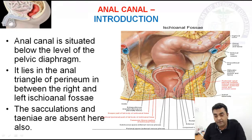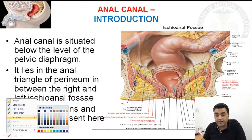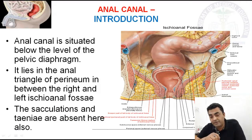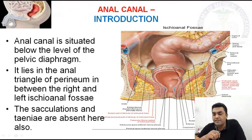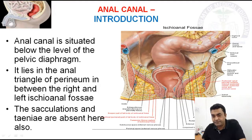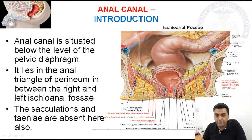The anal canal is situated in between the right and left ischioanal fossae. If you are seeing, this is the part of the right ischioanal fossa, and this is the part of the left ischioanal fossa. In between them, you are seeing that the canal is present — this canal is called the anal canal. The taeniae coli and haustra are absent here, as in the rectum.